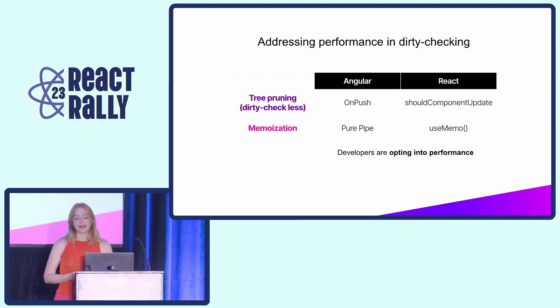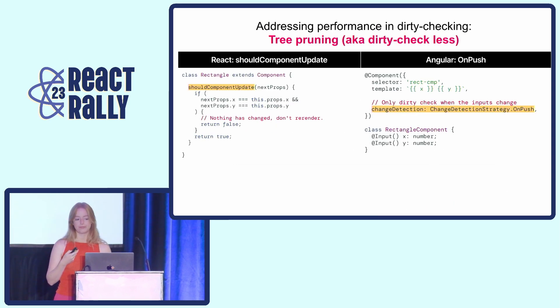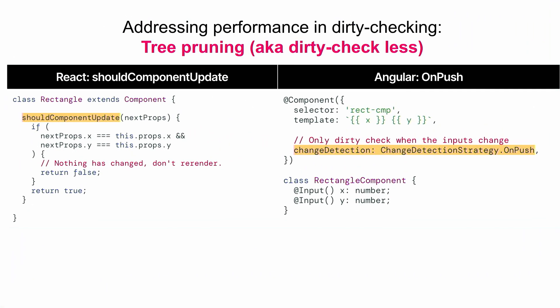Both Angular and React give developers options for managing the increased workload. In fact, we both support the same major two techniques: tree pruning and memoization. Tree pruning is an optimization technique for dirty checking where some components can be skipped if it's known that nothing's changed in them. React supported tree pruning for class-based components with shouldComponentUpdate, which allowed a component to decide when it needs to be re-rendered. In Angular, OnPush provides a very similar mechanism, avoiding dirty checking of a component when it's not required.